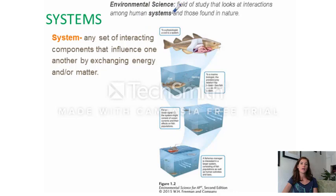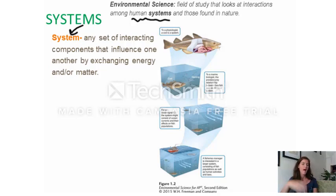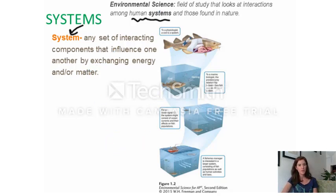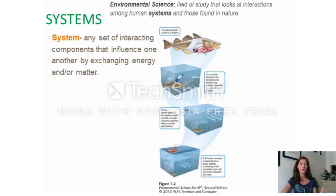Environmental science looks at the interactions between human systems and natural systems. One thing I want to go over is what a system is. A system is a set of interacting components that influence one another by exchanging matter and/or energy. The boundaries of a system are determined by who is looking at it. Your book has a diagram showing systems from small scale to large scale, using a cod as an example.